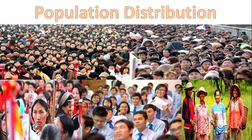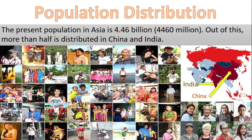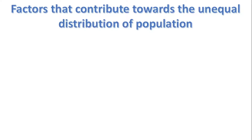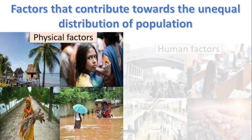Population distribution is a critical phenomenon which can be used to determine whether any region in the world has reached its own limitations in terms of population and its distribution. Population distribution means how humans have spread geographically on the surface of the Earth. The present population in Asia is more than 4.46 billion, and more than half is distributed in China and India. This population is unevenly distributed among Asian countries. There are many factors that have contributed to this unequal distribution, divided into two categories: physical factors and human factors.